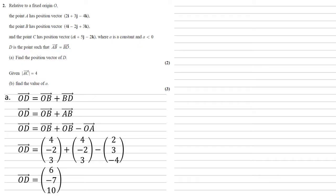We now want to find the value of a when given the fact that the magnitude of AC equals 4. Now we can calculate the magnitude of a vector by using Pythagoras' theorem.